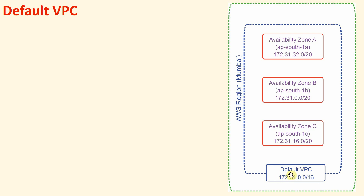Further, it has been divided into three subnets. If we are going to launch in zone A, we will get the private address from that range. If it is zone B, we will get from the 172.31.0.0/20 range. And if it is zone C, we will get from that address range. So this is called the default VPC.